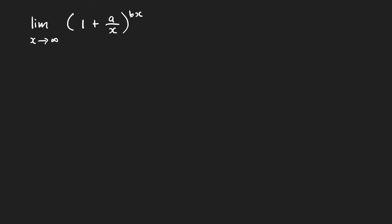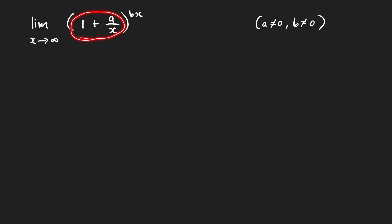Let's find the limit of this expression as x approaches infinity. Clearly, this is an indeterminate form when a is not equal to 0 and b is not equal to 0. As x goes to infinity, this expression goes to 1 and the exponent goes to positive or negative infinity. That form is considered the indeterminate form 1 raised to infinity.